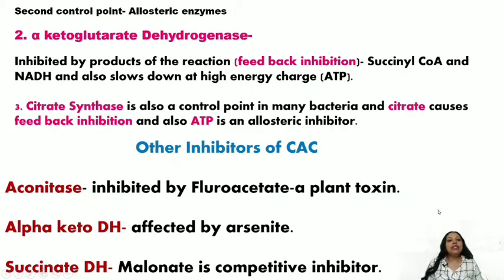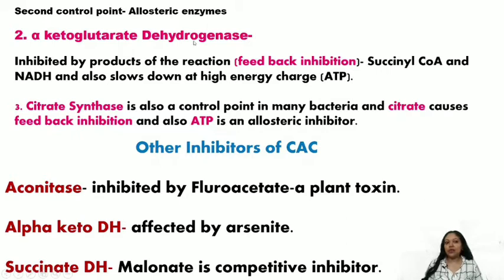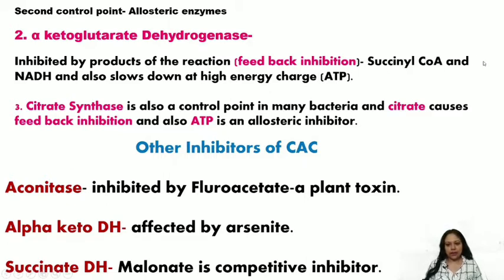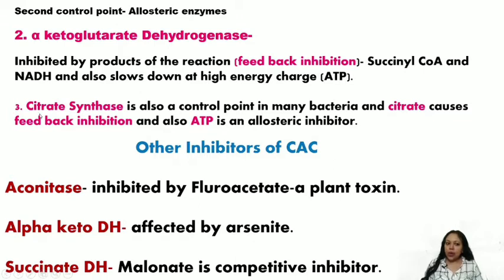The second control point is alpha-ketoglutarate dehydrogenase. It is a regulatory enzyme because it has a high negative delta G and is structurally very similar to the pyruvate dehydrogenase complex. This enzyme is inhibited by feedback inhibition — its own products, succinyl coenzyme A and NADH, inhibit it — and also by the high energy charge of the cell.